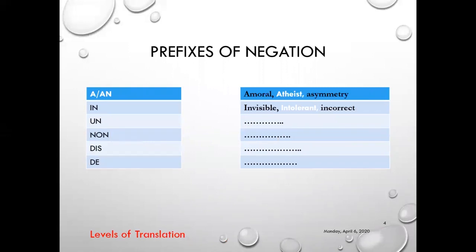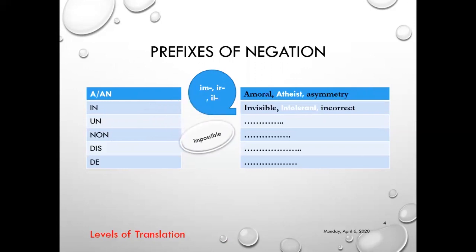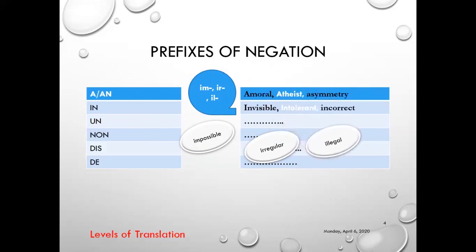For example, we have got prefixes of negation. If they are attached to words, they give the opposite. 'A' and 'an,' which are attached to words to mean the opposite — moral, amoral — which are different and used in different contexts. 'In,' for example, is used for the opposite as well, and it may change the following sound. For example, 'impossible' — it was originally 'in-possible'; 'irregular' — originally 'in-regular'; and also 'illegal' — 'in-legal.'